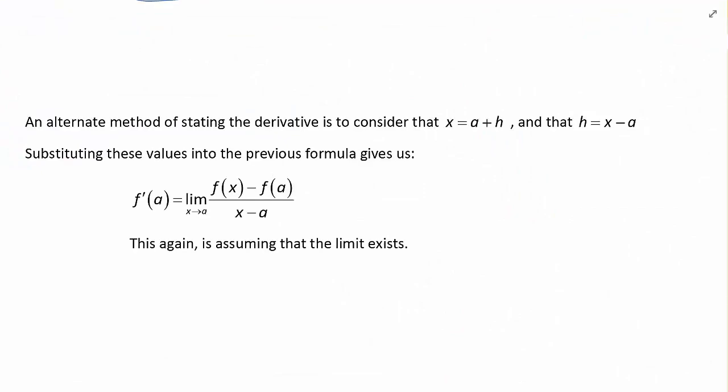Now an alternate method of stating the derivative of the function is to consider that x is equal to a plus h, and therefore that h is equal to x minus a. If we substitute these values into the previous formula for f prime of x, it gives us f prime of a is equal to the limit as x approaches a of f of x minus f of a over x minus a, and this again is assuming that the limit actually exists.